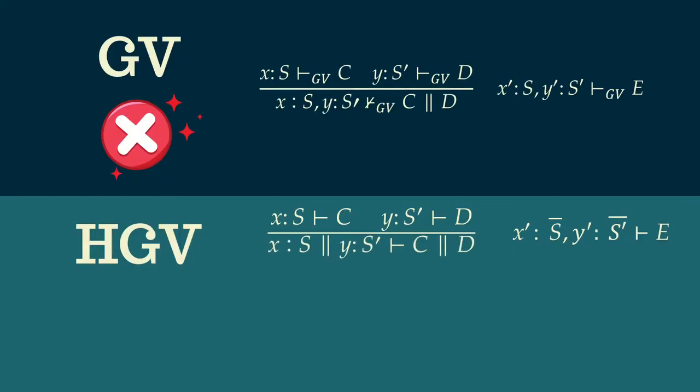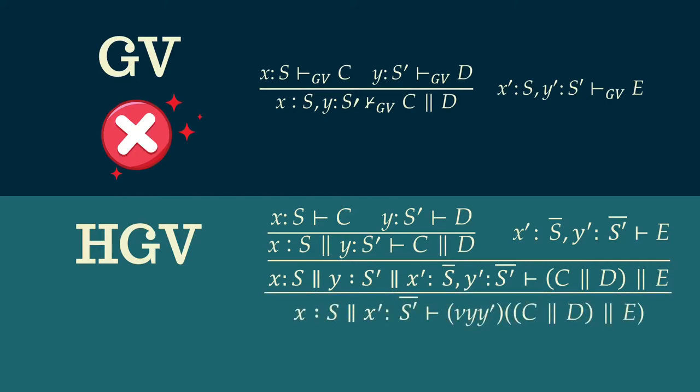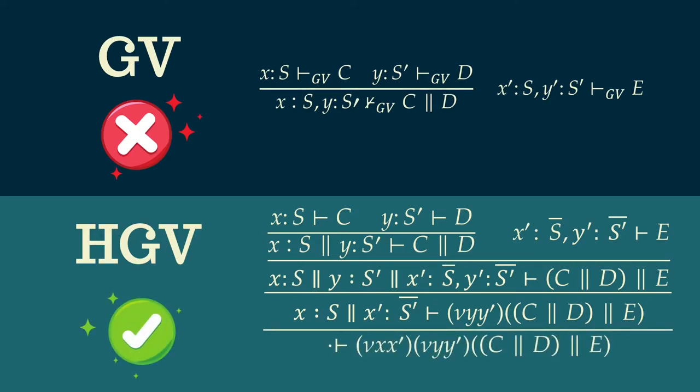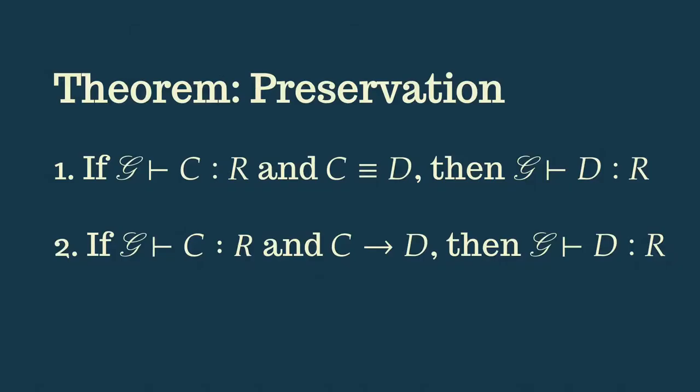So for example, HGV can type the troublesome GV example we had earlier. So unlike before, C and D don't need to communicate. We just need to keep track of the fact that X and Y must be used in separate threads, which we do by inserting a hyper-environment separator. We can do the same for E. Then we merge the two rightmost hyper-environments and remove Y and Y' in order to hide the channel behind a name restriction. And finally, we can do the same for X and X'. And from here, we can show a very standard preservation theorem without needing to resort to a special treatment of structural congruence.